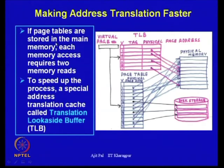As we know, we store the page table in the main memory. And if the page tables are stored in the main memory, each memory access requires two memory reads. As a consequence, that takes a long time. For example, first you have to get that page frame number, and using that page frame number you have to find where it is physically located, then you will be able to access the actual data. This will take a long time because it involves several memory accesses.